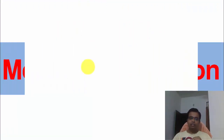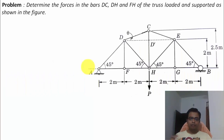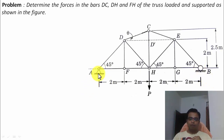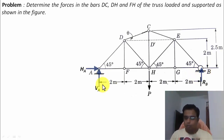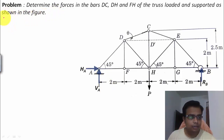Let's see what this problem has in store. Determine the forces in the bars DC, DH, and FH of the truss loaded and supported as shown in the figure. At point A we have a hinged support and at point B we have a roller support. The hinge support has two forces: one horizontal H_A and one vertical V_A. At point B, the roller support gives a normal reaction RB.